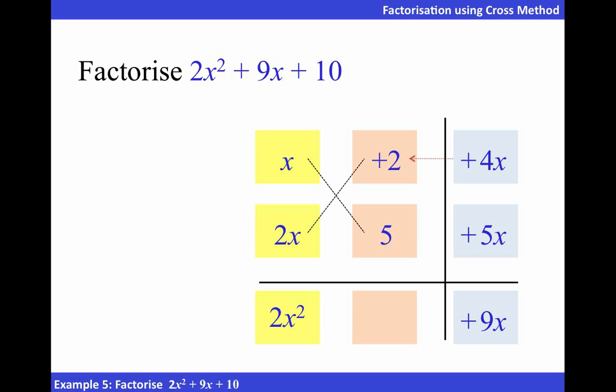We know that to get positive 4x, it means we have 2x times positive 2. Similarly, to get positive 5x, we would have x times positive 5.